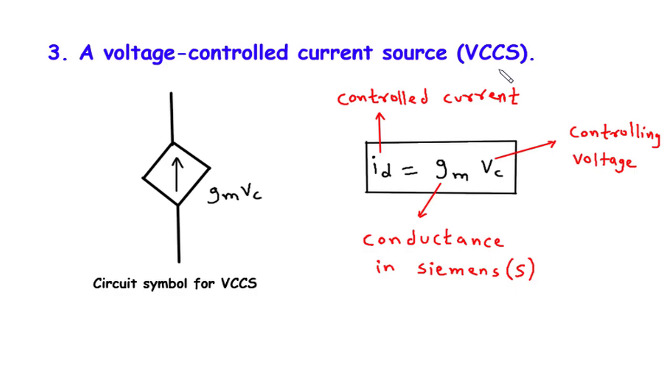Let's start with the basics. A voltage-controlled current source consists of a circuit element that generates a current proportional to the voltage applied to it. This relationship is at the heart of the VCCS and is expressed through a simple equation: ID equals GM into VC.